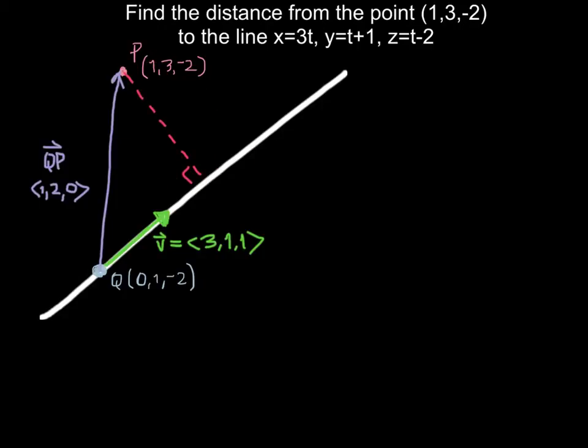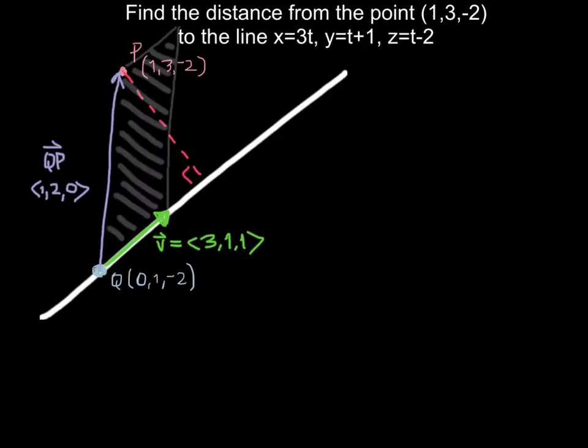Instead, let's recall that QP and v span a parallelogram. They're anchored at the same point. Let's take a look at what that parallelogram looks like. There we go, I've filled it in. Now remember, in class we discussed that the area of this parallelogram is equal to the magnitude of the cross product of QP and v. Let's write that down.